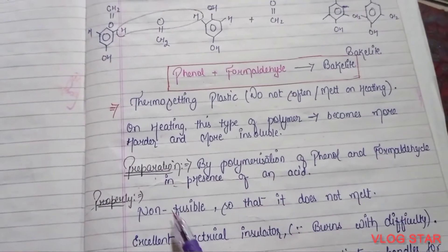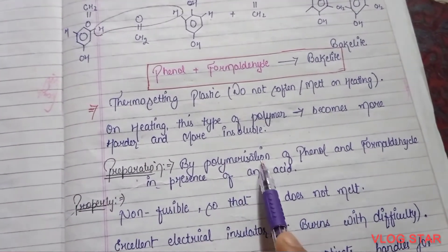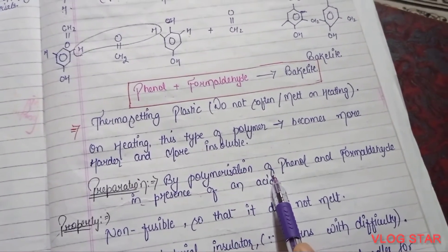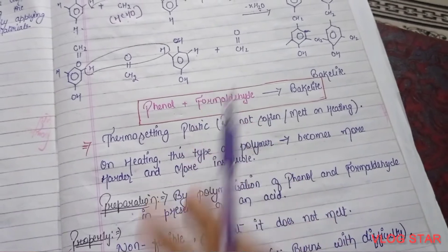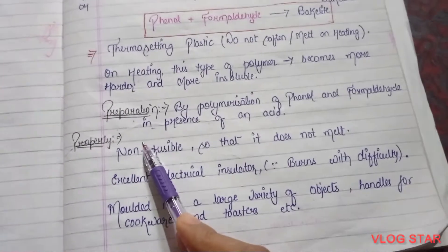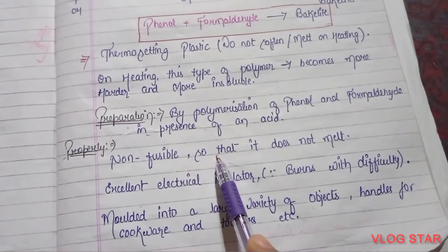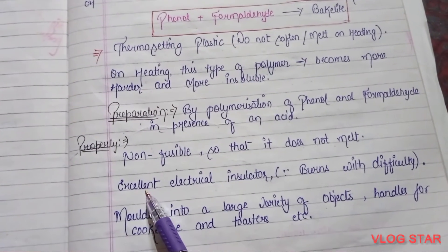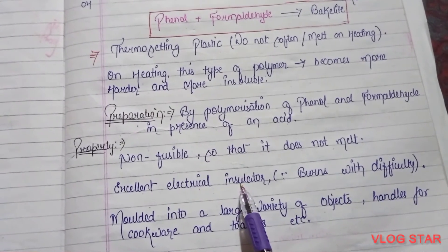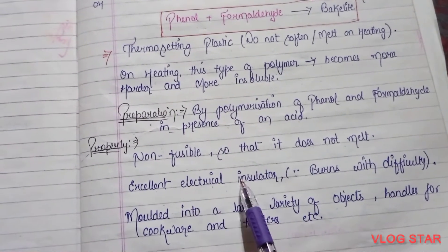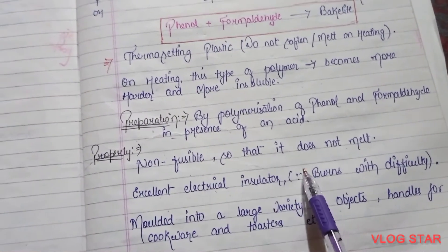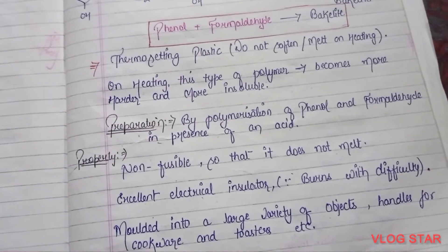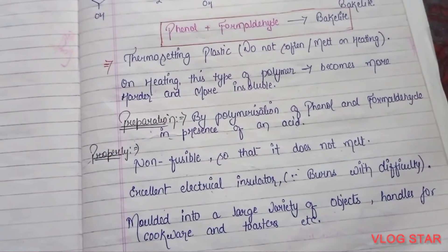Its preparation: polymerization of phenol and formaldehyde in the presence of an acid. Properties: it is non-fusible, so it does not melt — yeh non-fusible hota hai is liye melt nahi hota. It is an excellent electrical insulator — since yeh excellent electrical insulator hota hai, is liye hum log isko electric switches mein use karte hain.